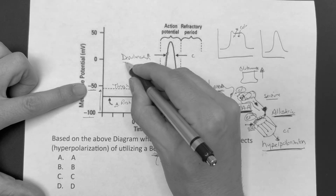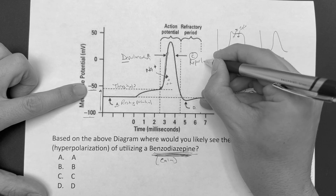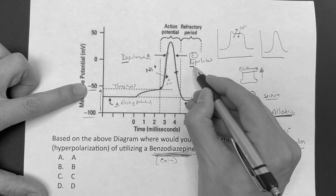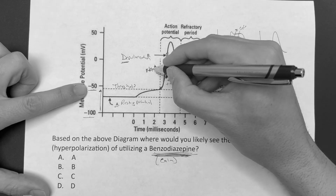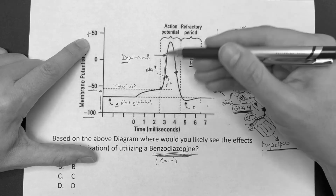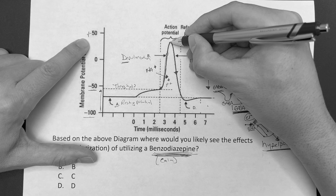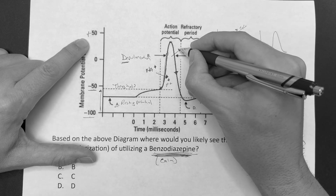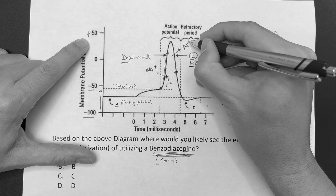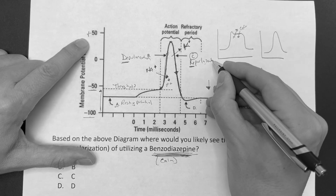When it comes back down, that's going to be repolarization — it returns. Sodium channels close, and then potassium opens. If the cell is going back to negative, I've got to get rid of something positive — and that's potassium leaving. Potassium leaves and the cell goes back down. That's your repolarization phase, point C.